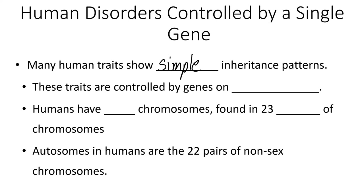These traits are controlled by genes on the autosomes, or non-sex chromosomes. Humans have 46 chromosomes, found in 23 pairs. Autosomes in humans are the 22 pairs of non-sex chromosomes.